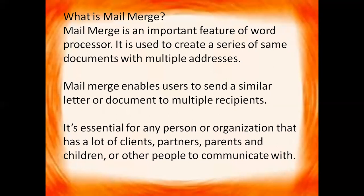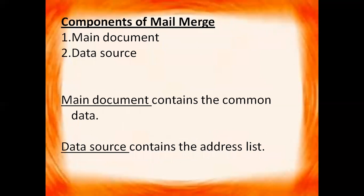So in mail merge, we can send one document, one letter, any document to multiple people. So what are the components of mail merge? The main document is the document in which we write — it can be an email document, it can be a letter, or anything. And the data source contains the address list of the people to whom we want to send the document. So the main document contains the common data and the data source contains the address list. So let us do it practically.